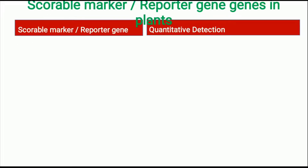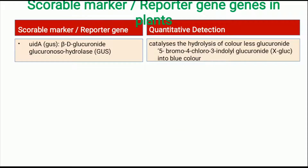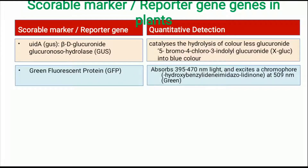Some scorable markers, also known as reporter genes, include: first, the UIDA or GUS gene, which stands for beta-glucuronidase. It reacts with the colorless substrate X-Gluc (5-bromo-4-chloro-3-indolyl glucuronide) to produce a deep blue indolyl compound. The next one is GFP or green fluorescent protein.